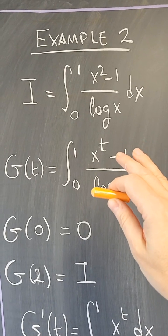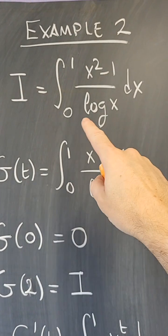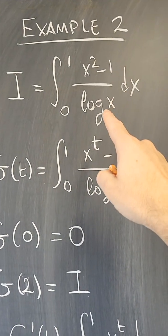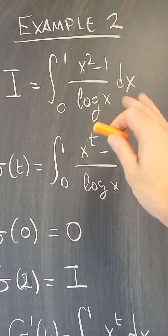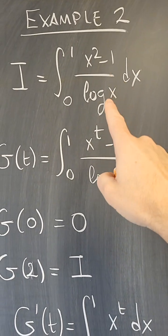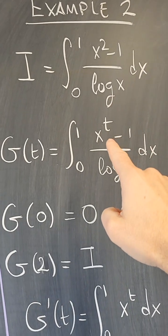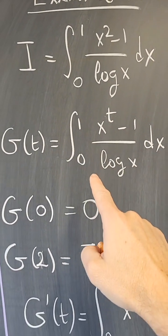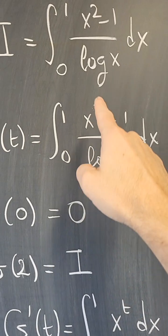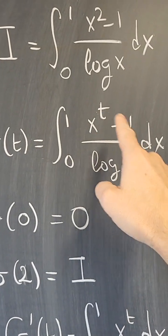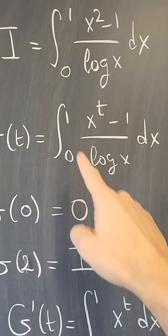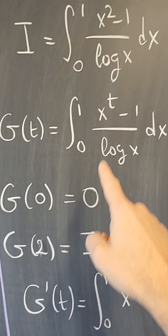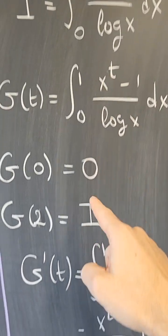Now, let's do a more sophisticated example. I want to compute the integral of x squared minus 1 over log of x, which would be very difficult by traditional methods. So I'm going to introduce a parameter, and now I'm going to put the parameter instead of that 2, put a t here, so that at 0, x to the 0 is 1, 1 minus 1 is 0, so all is 0, and at 2, I get the original integral.